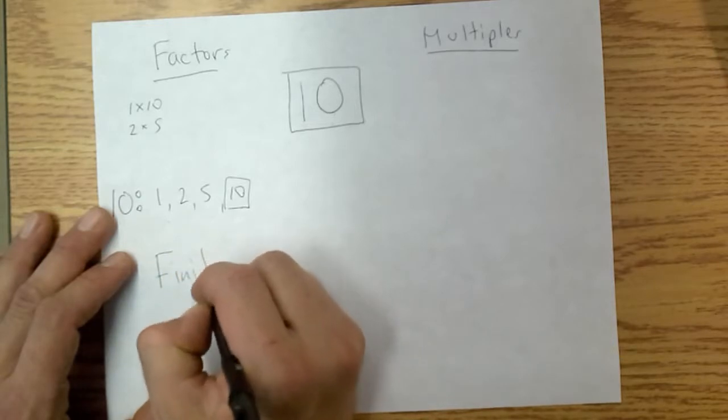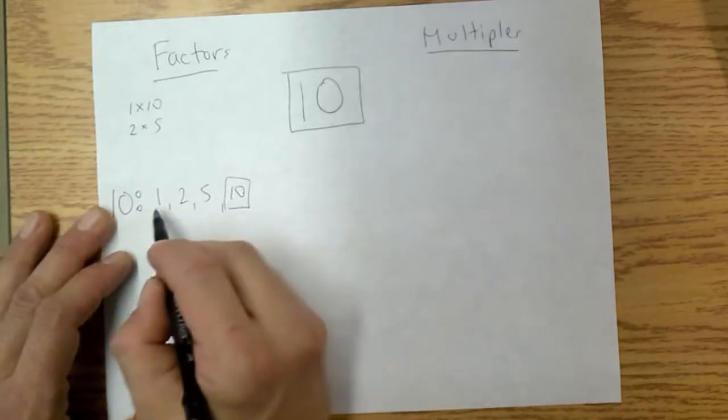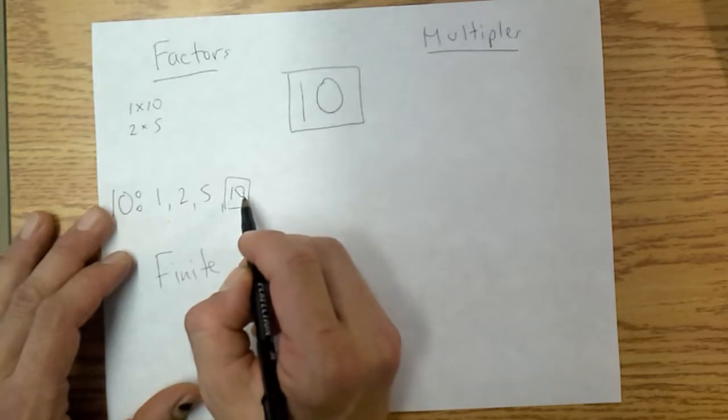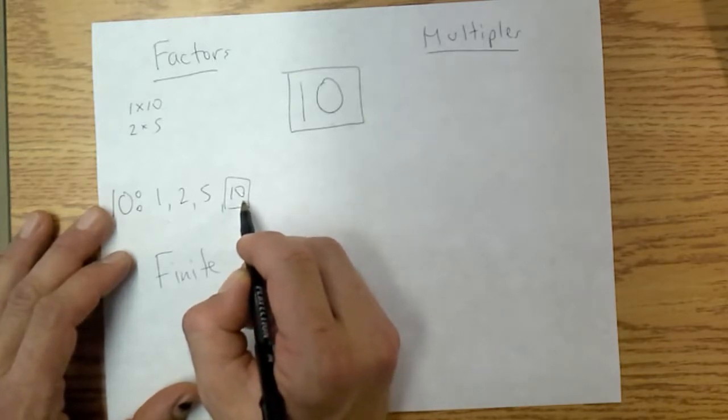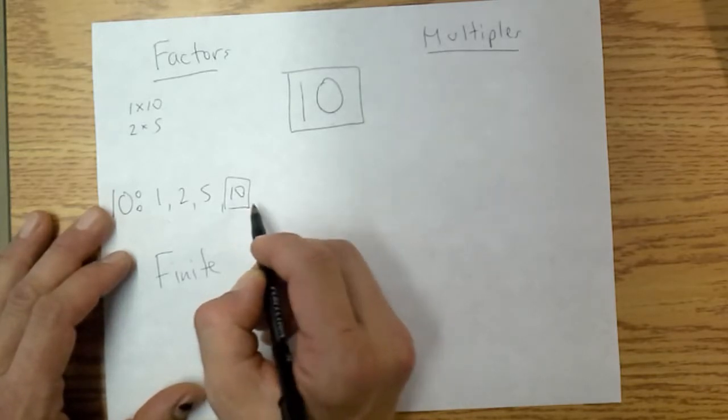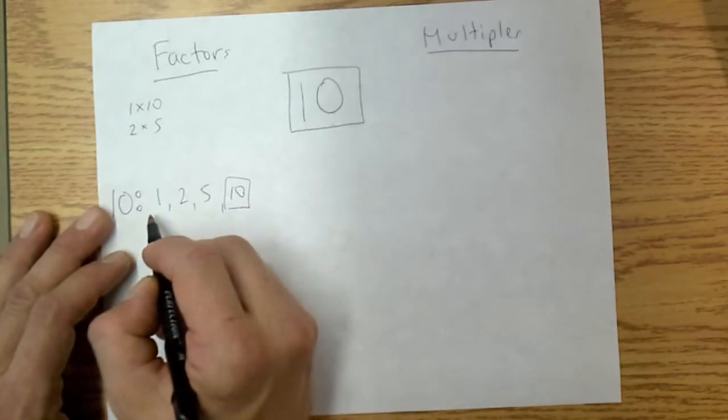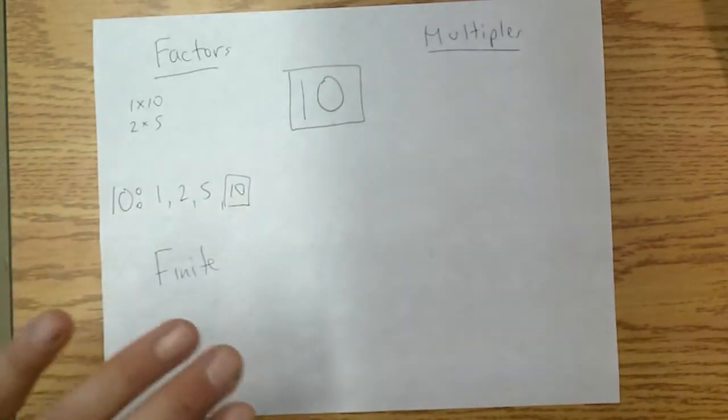Finite because we will be limited to how many numbers we have up until that number. If we're looking for the factors of a million, a million will be the largest factor of a million, and then there will be a bunch of numbers underneath it, and that will be a set number of numbers.